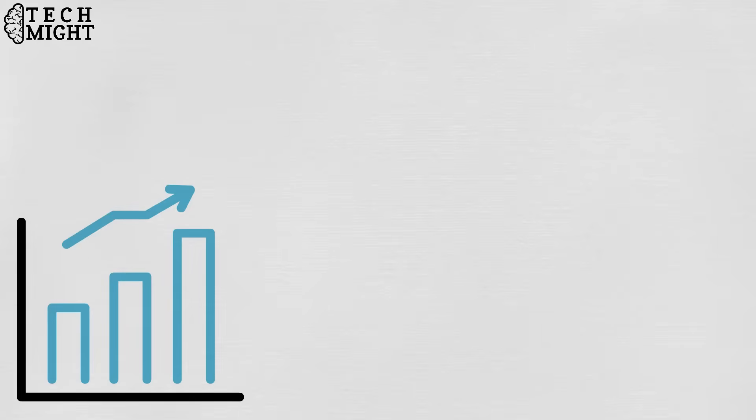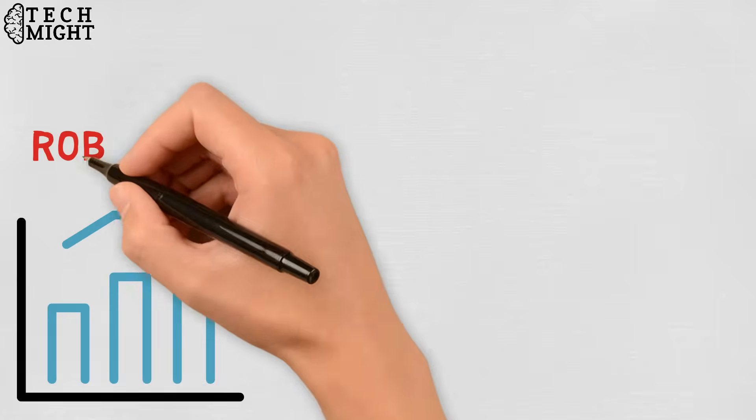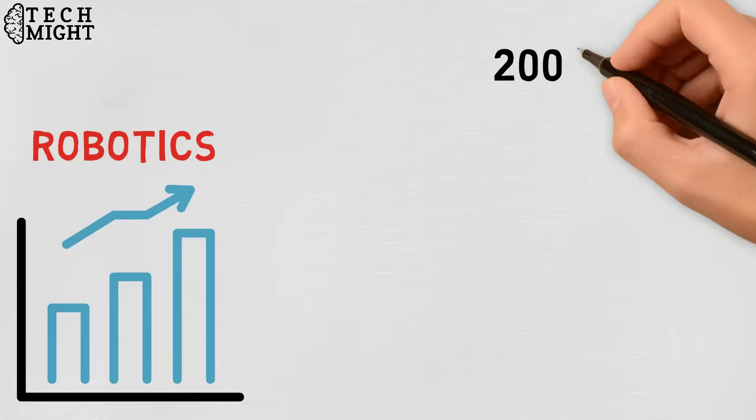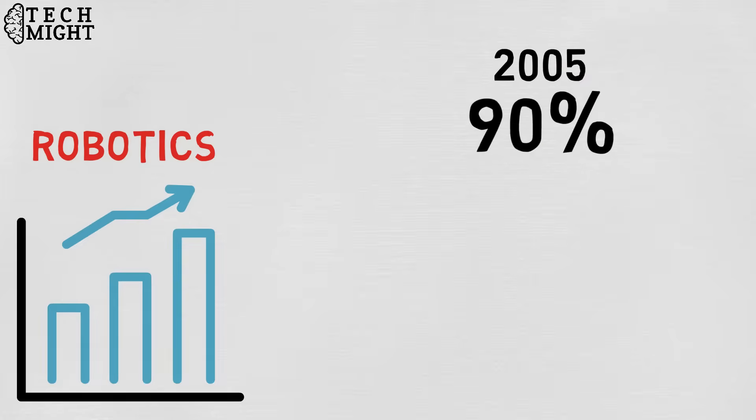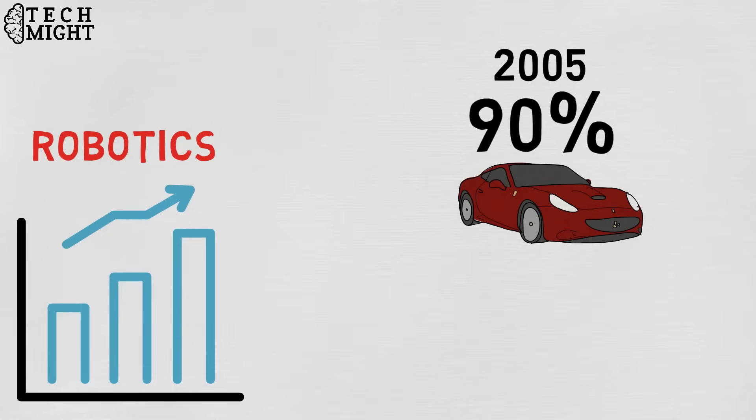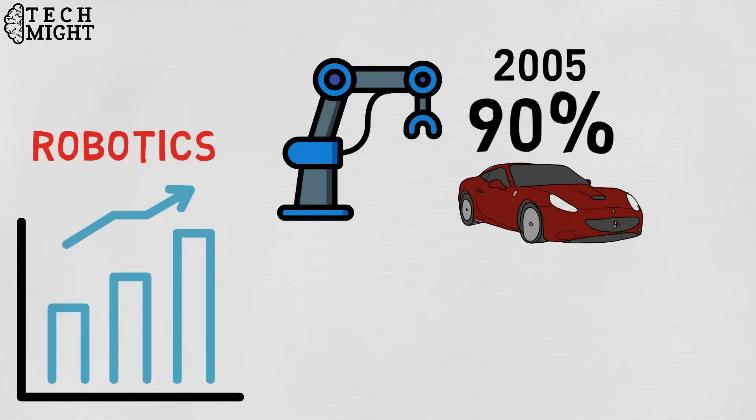As technology progresses, so too does the scope of what is considered robotics. In 2005, 90% of all robots could be found assembling cars in automotive factories. These robots consist mainly of mechanical arms tasked with welding or screwing on certain parts of a car.